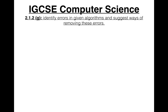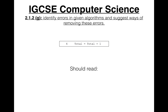The first error is on line 4: `total = total + 1`. This should read `total = total + num`, because we're totaling, not counting. We need to add what the user has input to the total, not increment by 1.